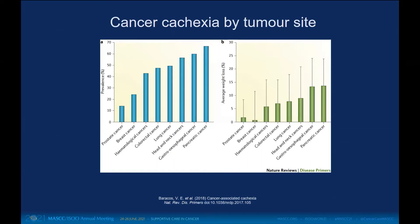Cachexia is more prevalent among certain types of cancer. Breast cancer and prostate cancer are less likely to be associated with cachexia, while pancreatic cancer, lung, and head and neck cancers are very commonly associated with cachexia. The average weight loss also differs, and pancreatic and GI cancers are predominantly associated with increased weight loss.